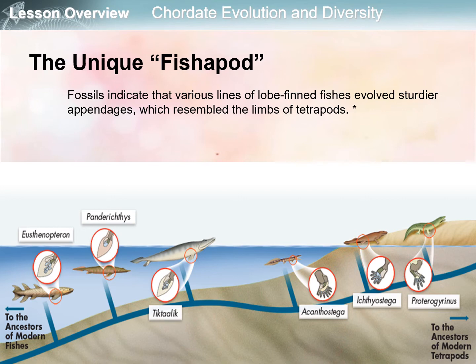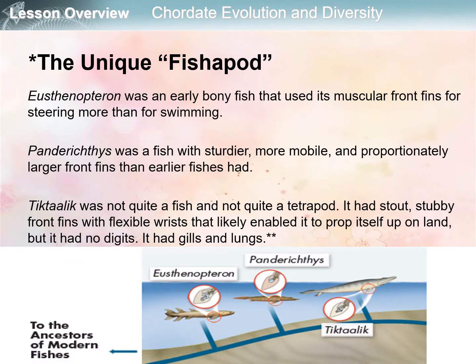Where do amphibians come from? Who are the ancestors of the amphibians? Let's start with the unique fishapods. Fossil evidence indicates that various lines of lobe-finned fishes evolved sturdier appendages which resemble the limbs of tetrapods. A series of transitional fossils have been discovered that document the skeletal transformation from lobe fins to limbs, as shown in the figure.